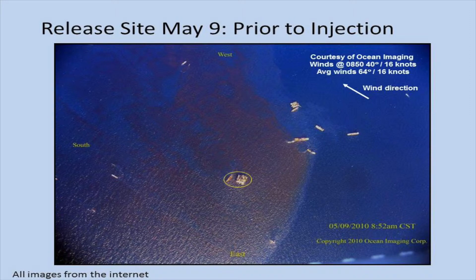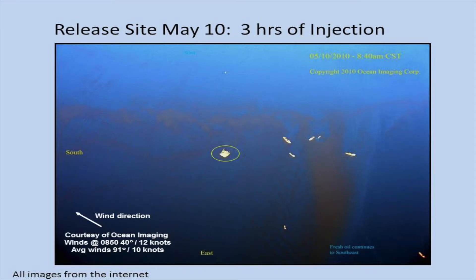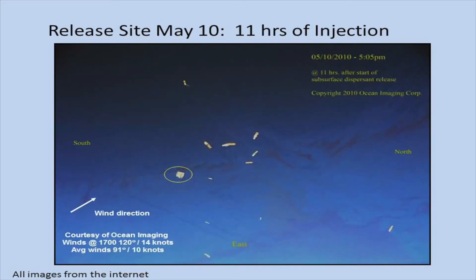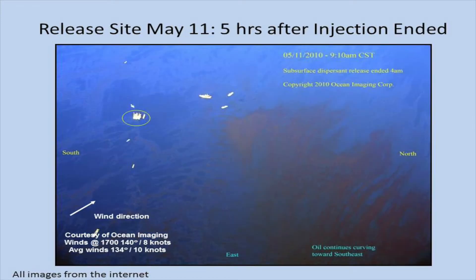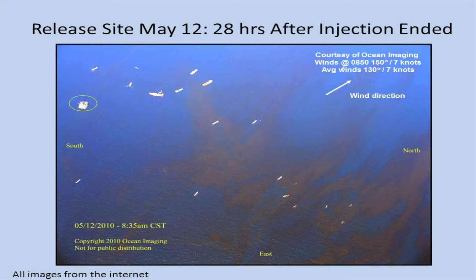Here's an interesting picture you've probably seen. This is prior to injection — a satellite view — and you can see the oil slick. This is the Deepwater Horizon. After three hours of injection of Corexit at the site of discharge, you see that a lot of the slick has gone away. Eleven hours of injection, much of it has gone away. Then after you stop injection, the slick comes back — 28 hours after injection ended, some of the slick returns. This was a clear test that adding the dispersant took the oil coming out of the deep-sea spill, broke it up into droplets, and created a plume — but no surface slick.